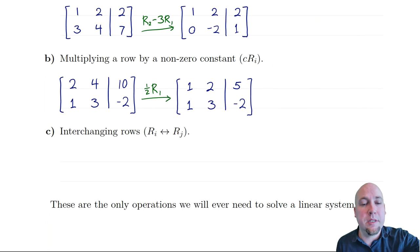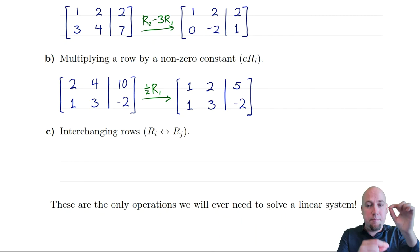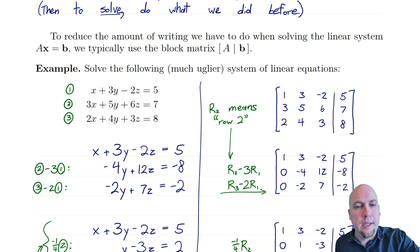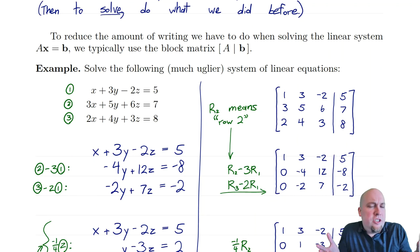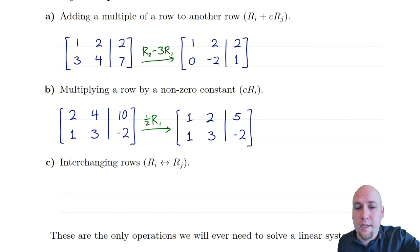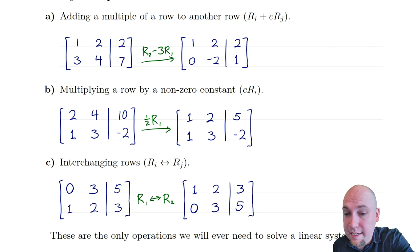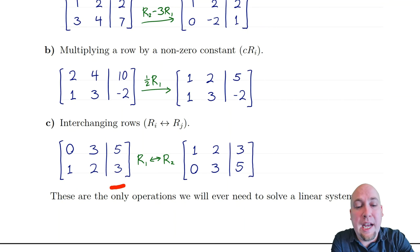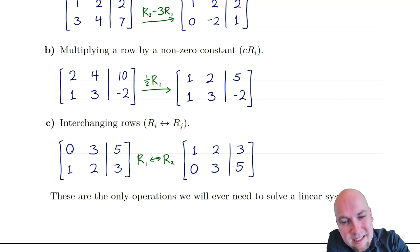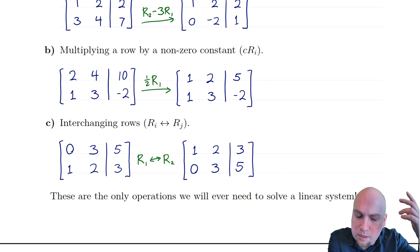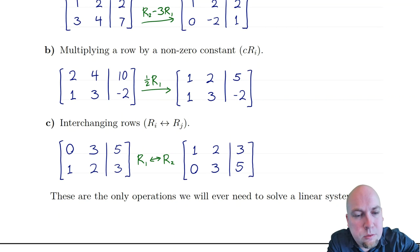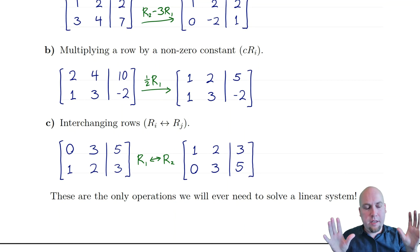The third elementary row operation is interchanging two rows — swapping their positions. This is allowed because swapping two rows just corresponds to swapping the order of equations in the linear system, which doesn't change the solutions at all. As an example of why you'd want this: if the top row has a zero leading coefficient, you can't subtract any multiple of it to clear the bottom-left entry. So instead, just swap the two rows — now you have that zero where you want it and the system is more triangular.